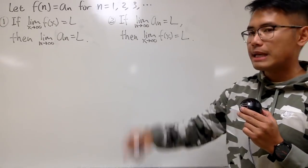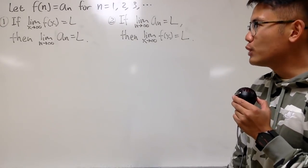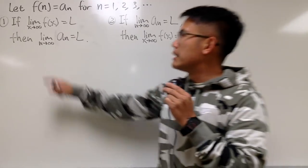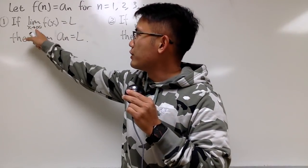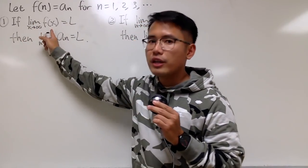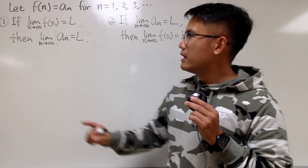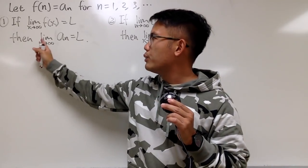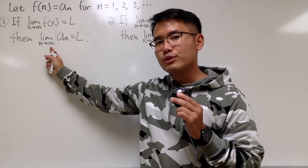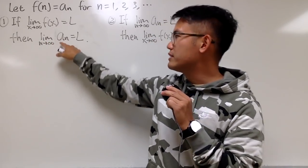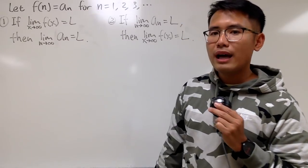Here we have two statements. The first one says: suppose we have the limit as x goes to infinity of the function equals some number L. Then, can we conclude that the limit as n goes to infinity of the sequence equals L as well?